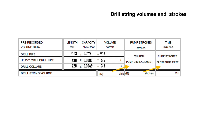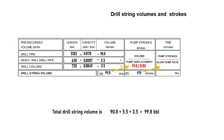Now we calculate drill string volume. Each section length is multiplied by internal capacity. Total drill string capacity is 99.8 barrels. Divided by pump displacement of 0.102, we get the number of strokes: 979. Divided by 30 SPM, we get pumping time of 33 minutes.